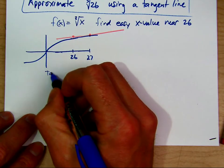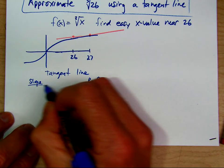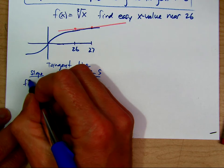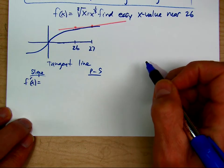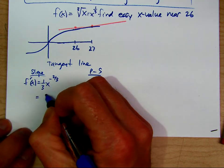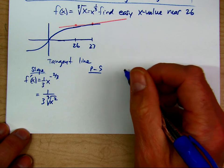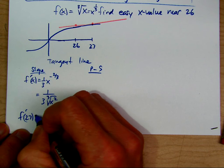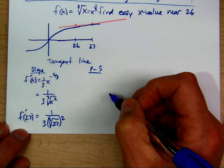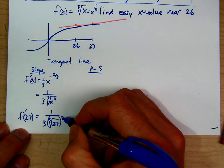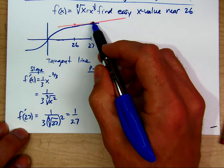For the tangent line, we have to find the slope and then use the point-slope formula. The slope uses f prime. Looking at this as x to the one-third, we can use the power rule: one-third x to the negative two-thirds. We need to evaluate that at 27. F prime of 27 — the cube root of 27 is 3, squared is 9, times 3 is 27. So the slope of the tangent line at 27 is 1 over 27.